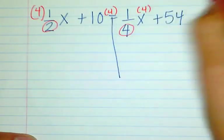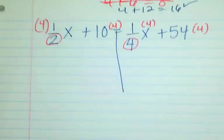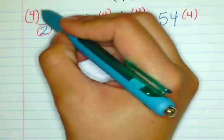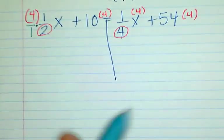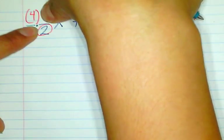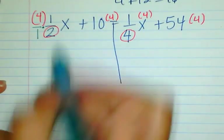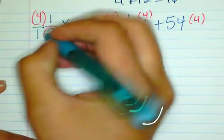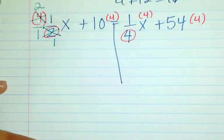I'm multiplying each term of the equation — just like with real numbers — so I can keep the equality. When I multiply 4 by one-half, you can put the 4 over 1 if that helps. We can simplify diagonally: the 2 and 4 cancel, leaving a 1 and a 2. So I have 2 times 1 which gives me 2x.